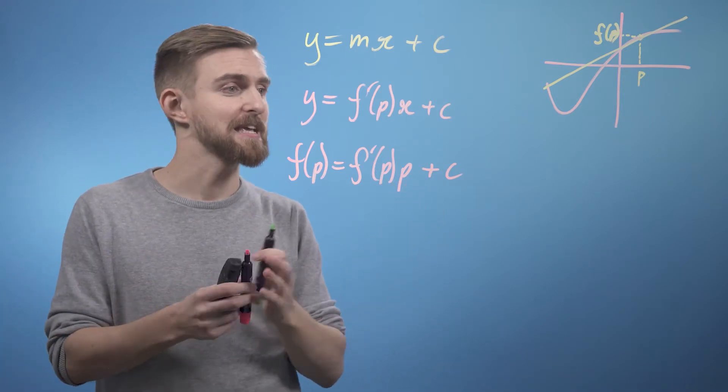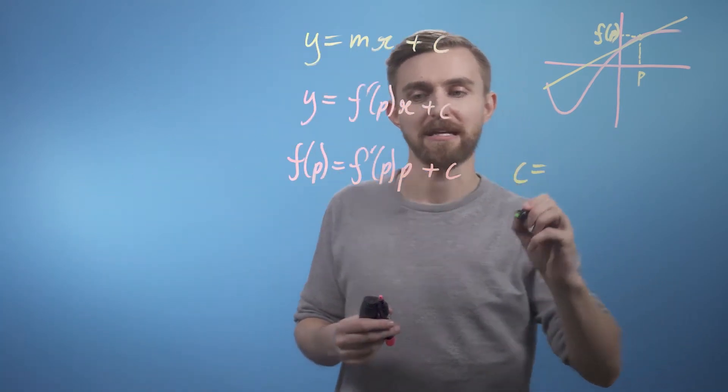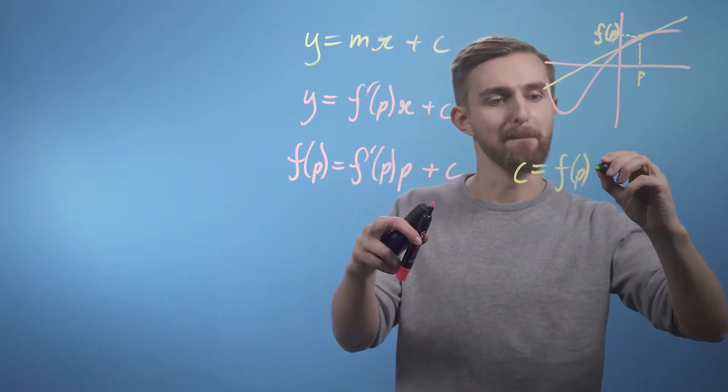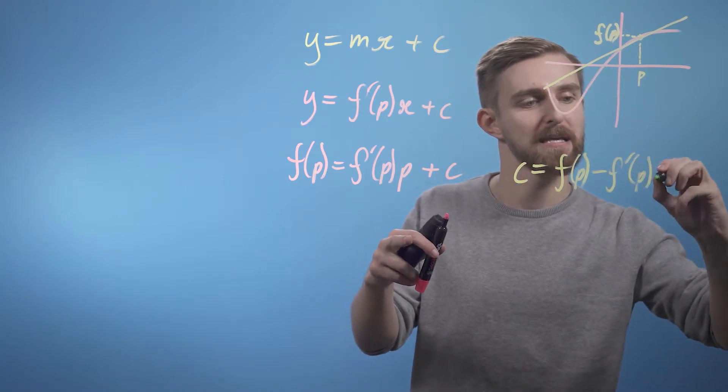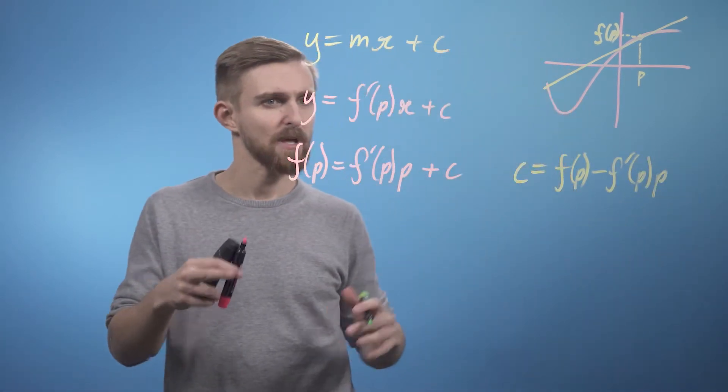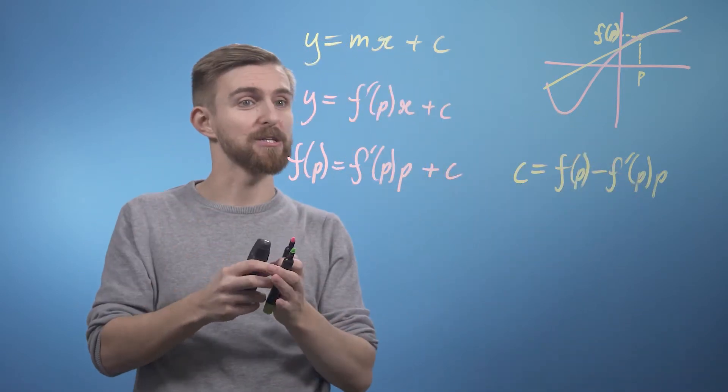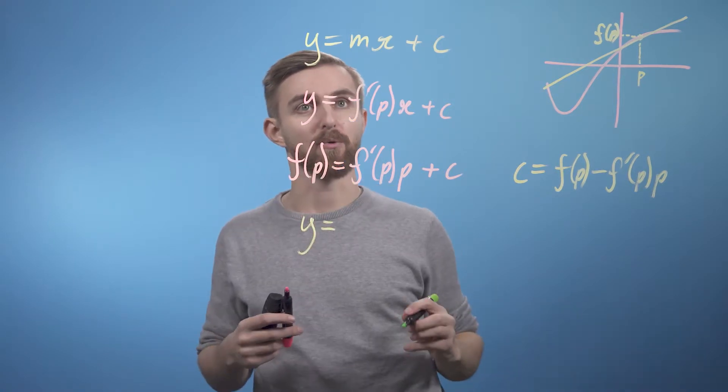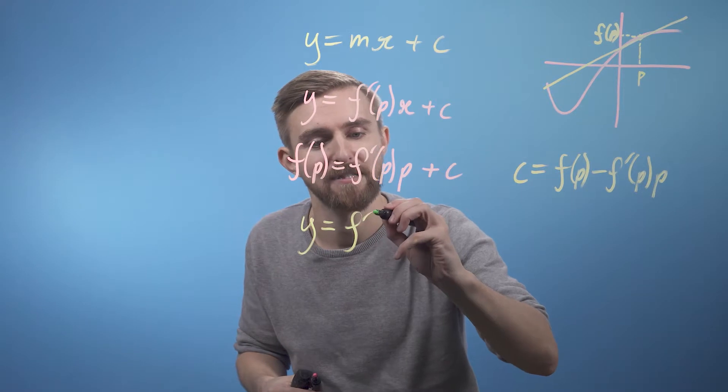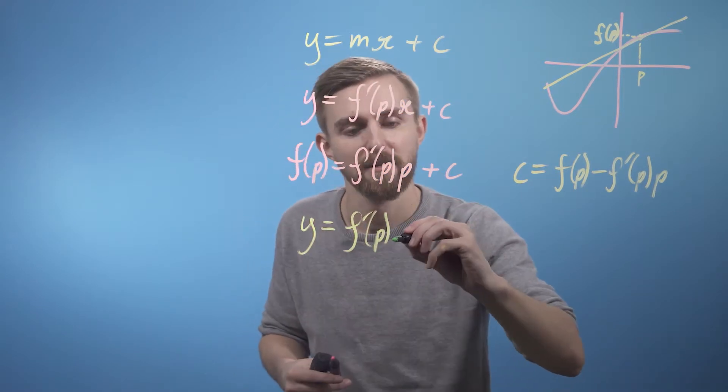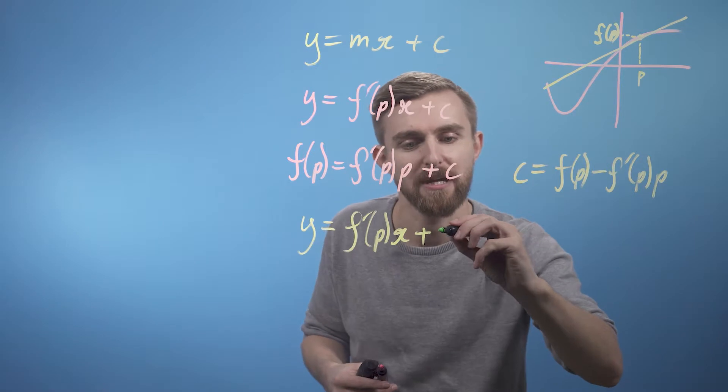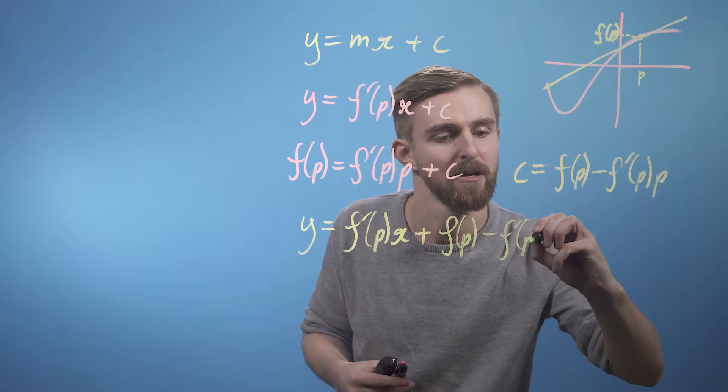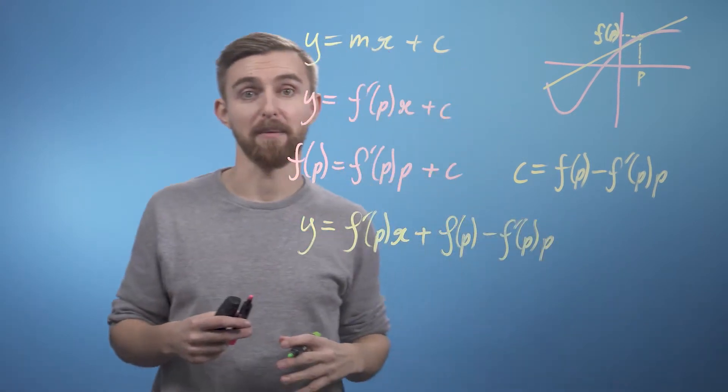Rearranging for c, we can just see that c is going to equal f(p) - f'(p) at p. Subbing the c back into our general equation, we can now bring it around and say, well this line has the equation y = m which is just f'(p) times x + c which is just f(p) - f'(p) multiplied by p.